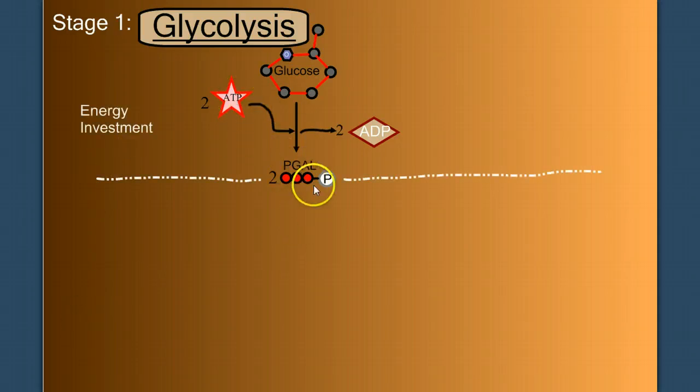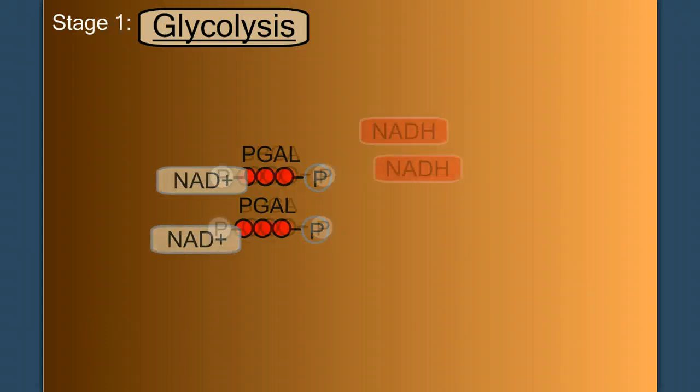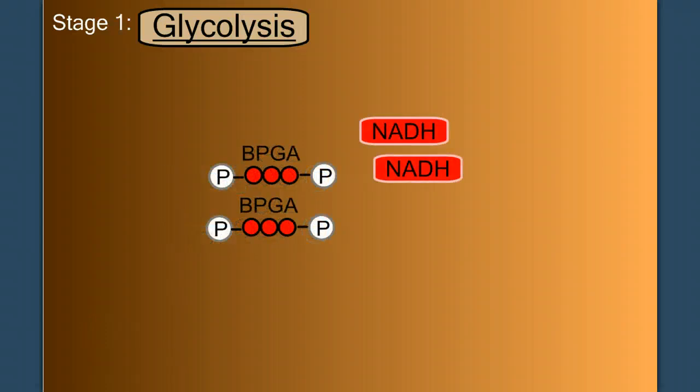We spend two ATP to make two PGAL. Now these two PGAL molecules are used to reduce NAD plus into NADH. And in doing so, the PGAL are converted into BPGA, or biphosphoglycerate. Now these two molecules of NADH are carrying for us high energy electrons. They're very similar to the electron carriers NADPH that we saw in photosynthesis, but obviously minus a phosphate, so it's NADH. But these two molecules have a lot of energy left in them. They're carrying high energy electrons, and that's energy we can tap into later.